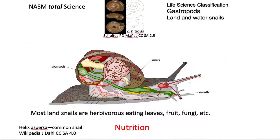For nutrition, most land snails and indeed most of the aquatic snails are herbivorous — eating leaves, fruit, and fungi. For the water ones, it will be algae and other soft plant material underwater.